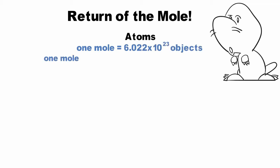How can we practically apply these laws to quantify chemical compounds? The answer is to revisit the mole. We know that one mole is equal to 6.022 times 10 to the 23rd objects and one mole of any element is equal to its molar mass.